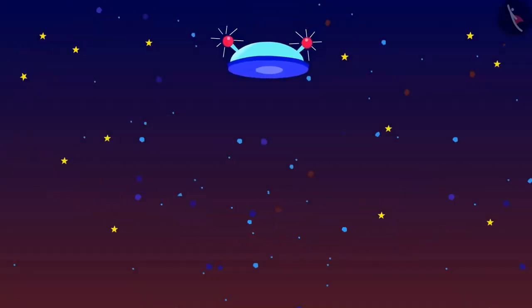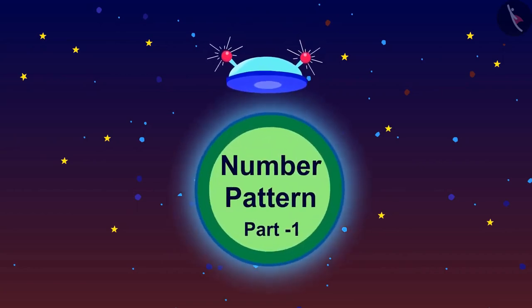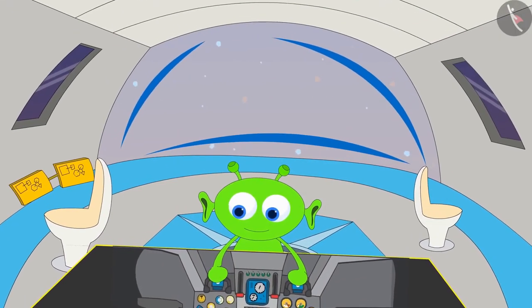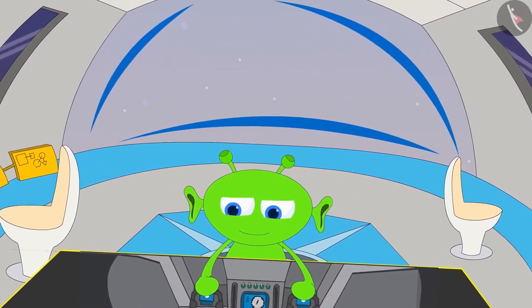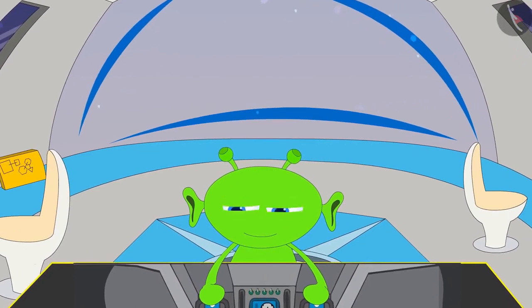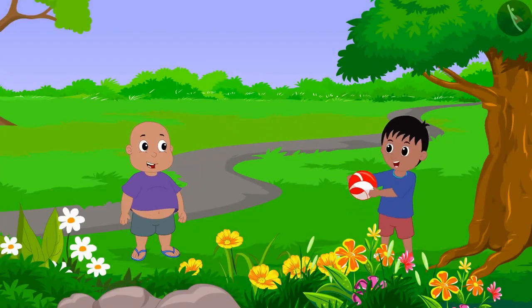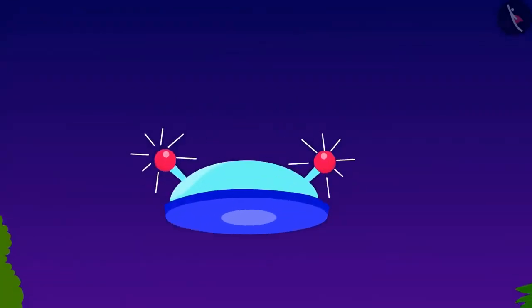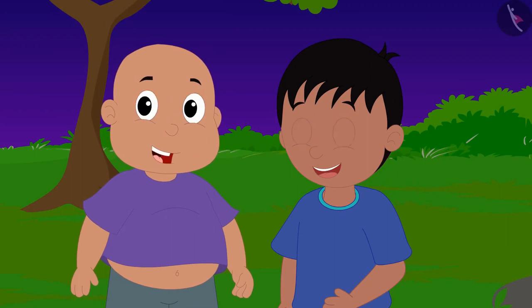Hello, children. In this video, we will learn about number patterns. The alien is going to meet Raju and Bablu today with his flying saucer. Raju and Bablu were playing in the park when the alien also reached there. Raju and Bablu are very happy to see the alien.